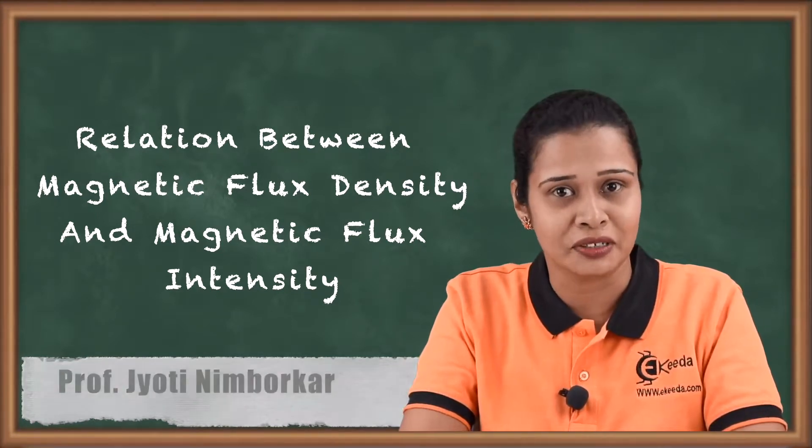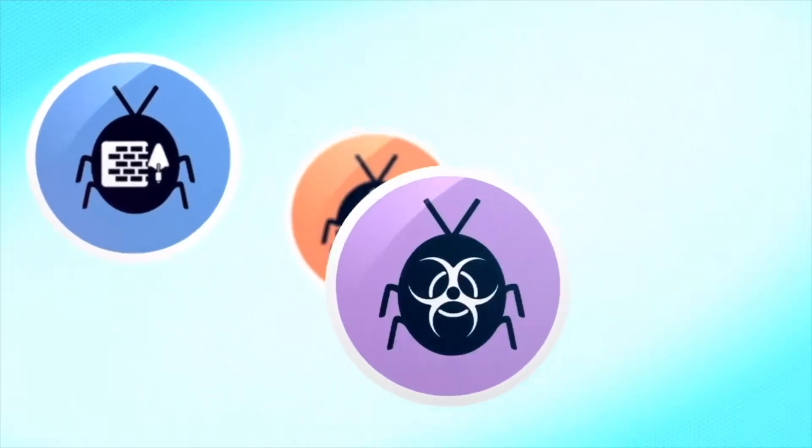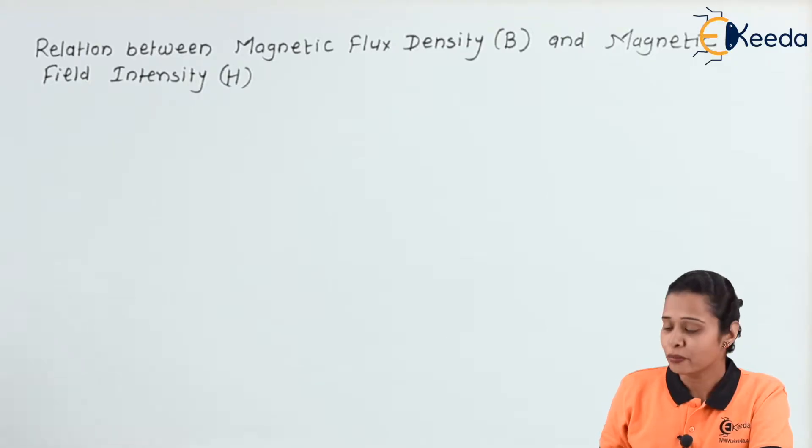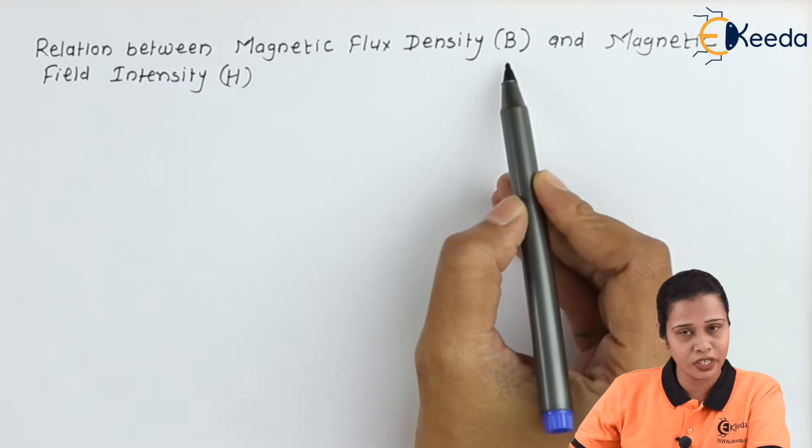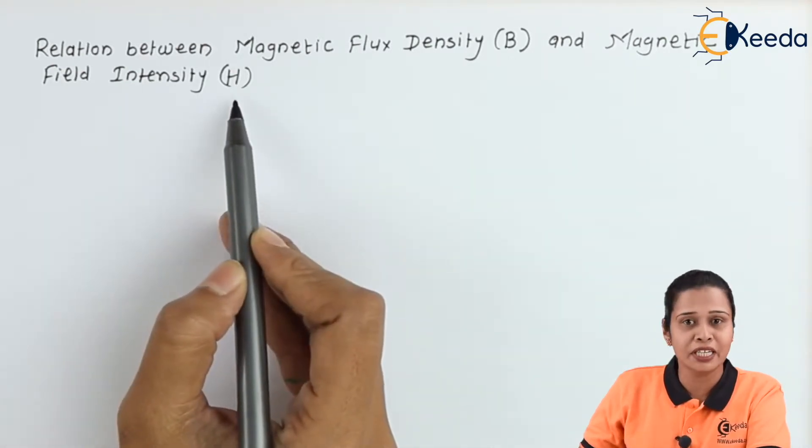So, let us start with the relation. We know magnetic flux density is denoted by capital B and magnetic field intensity is capital H.